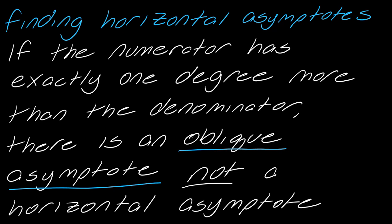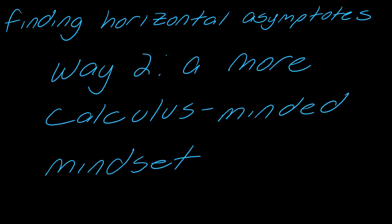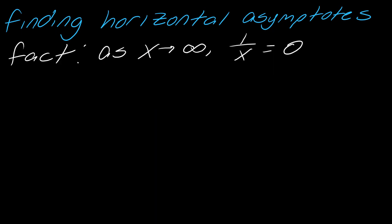That is way one. Way two is a little bit more of a calculus-minded mindset. We can't tell you everything about calculus because you still need more tools, but we can discuss the big idea. Here's a fact: as x approaches infinity, the value of 1 over x is eventually going to equal 0. As x keeps going out to infinity, this value goes to 0.